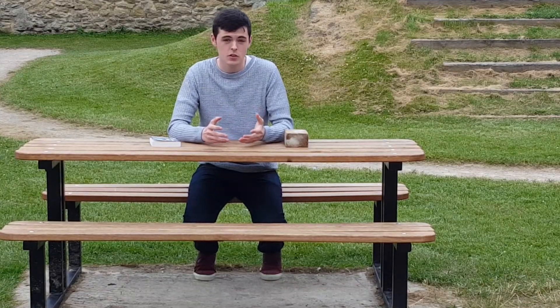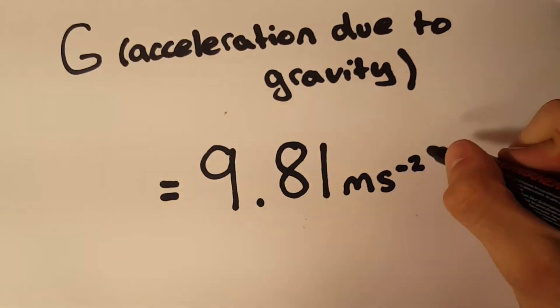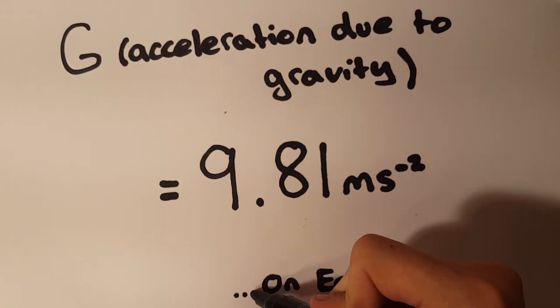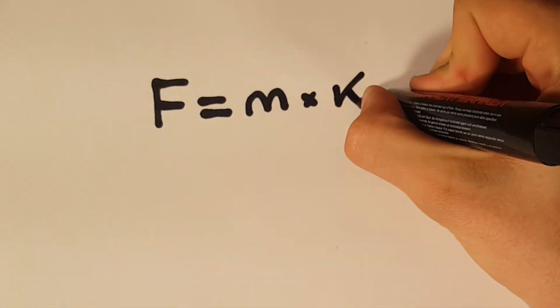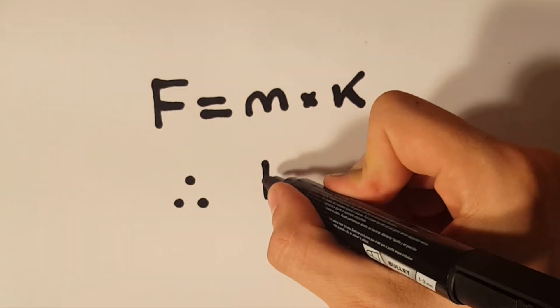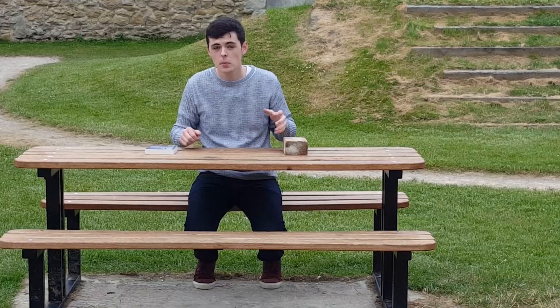When an object is in freefall, the only force acting on it that isn't negligible is gravity. Here on Earth, acceleration due to gravity is always 9.81 meters per second squared — this is a constant. And so because F is equal to M times a constant, the force acting on an object is always directly proportional to its mass.